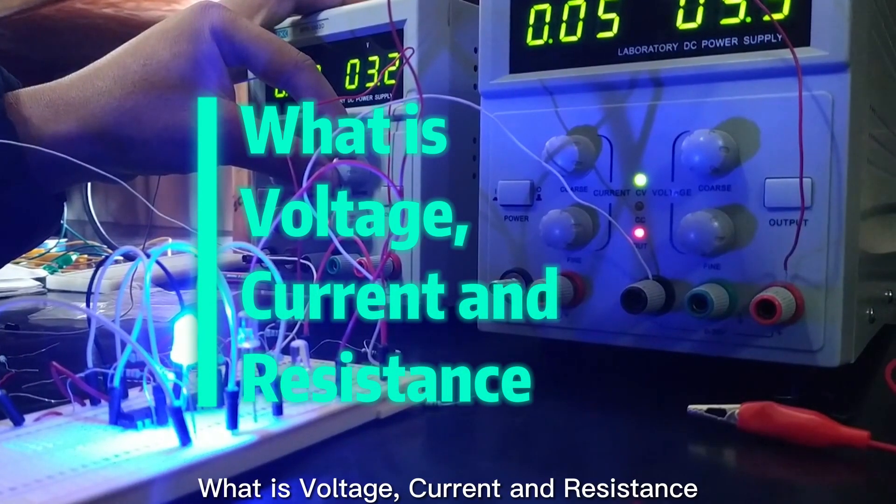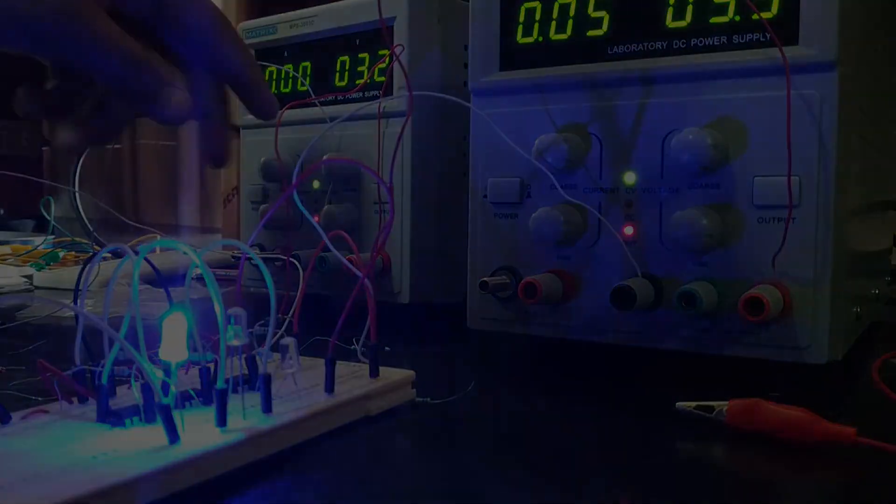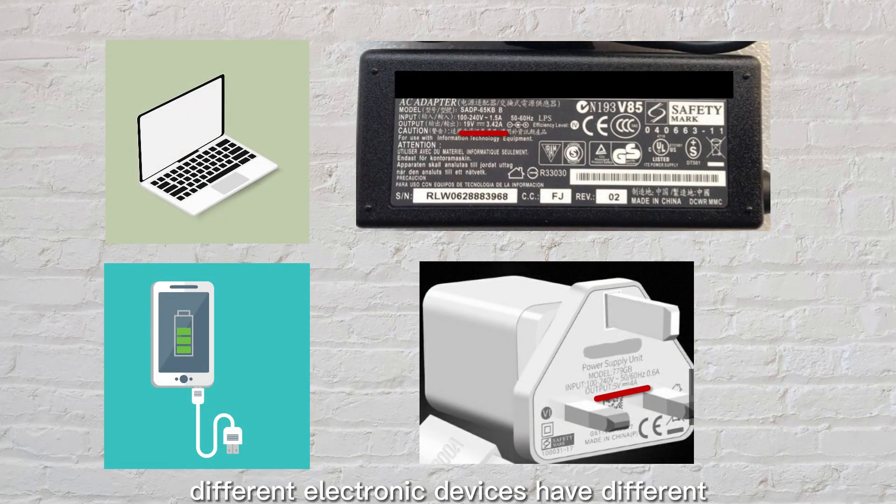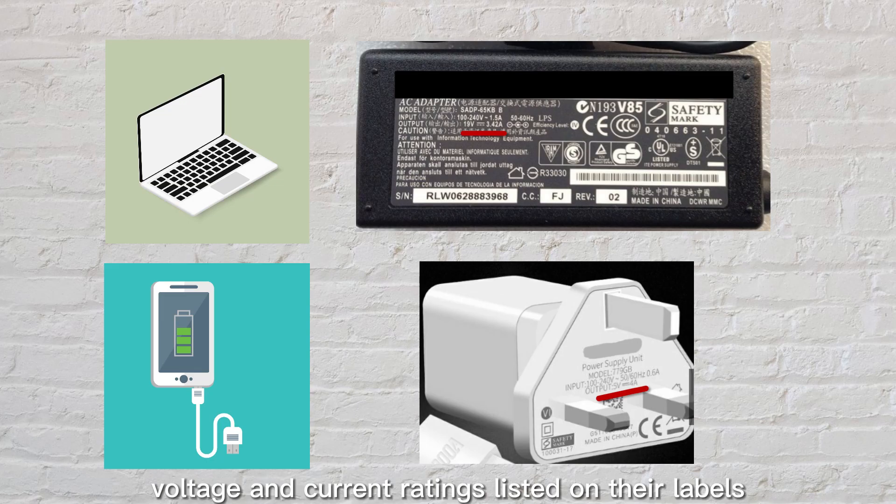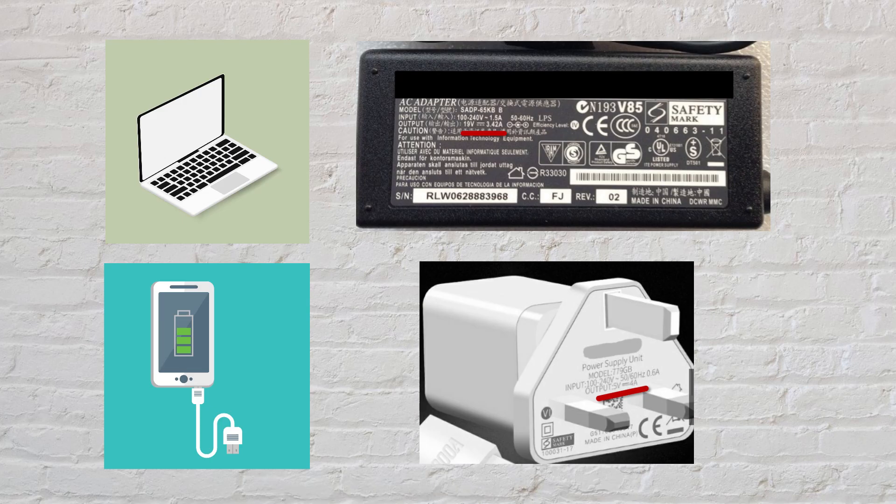What is voltage, current and resistance? You might have noticed that different electronic devices have different voltage and current ratings listed on their labels. But what do these numbers mean? The voltage rating tells you how much electrical potential is required to power the device. Different devices require different levels of voltage to function properly.